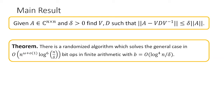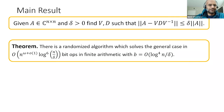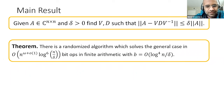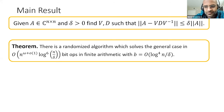The algorithm is randomized: with high probability — say 1 minus 1/n^5 — the output is correct, and the running time is always nearly matrix multiplication time.